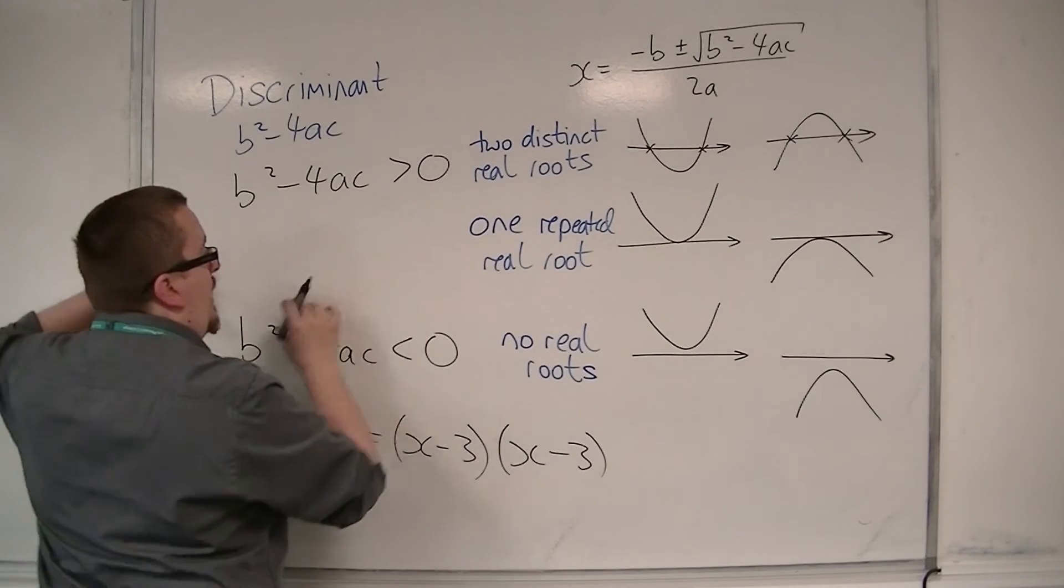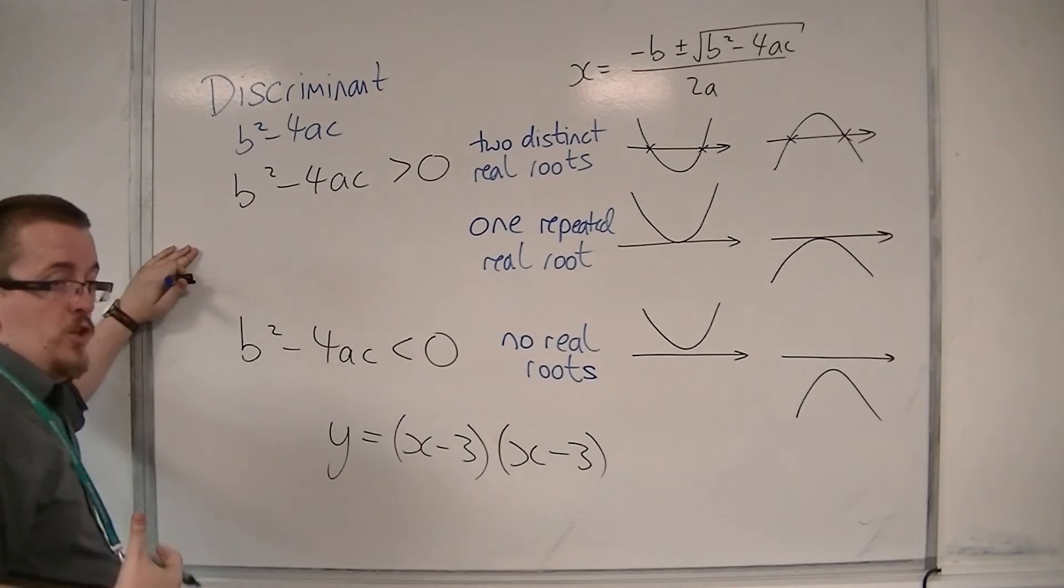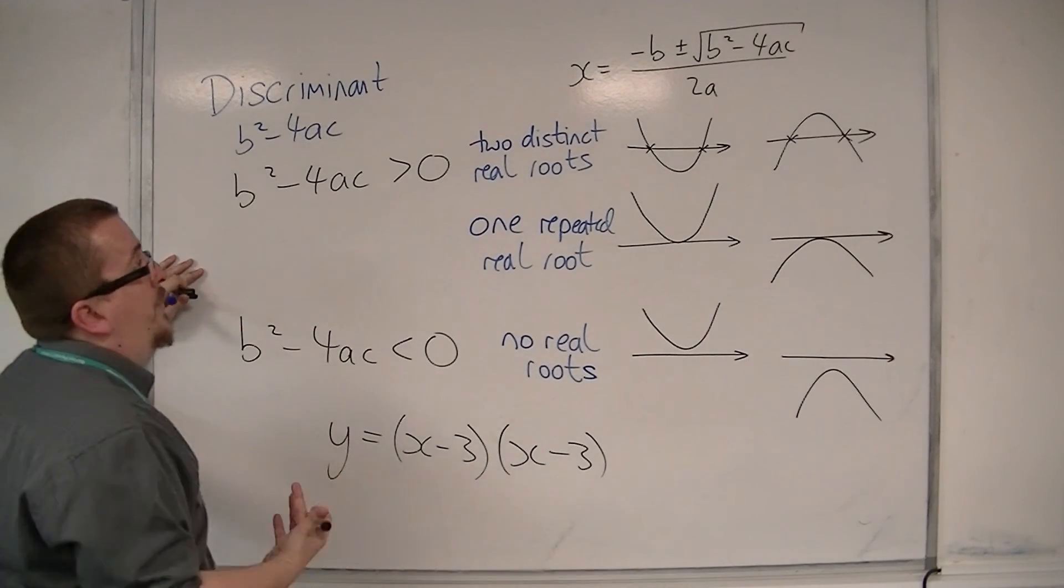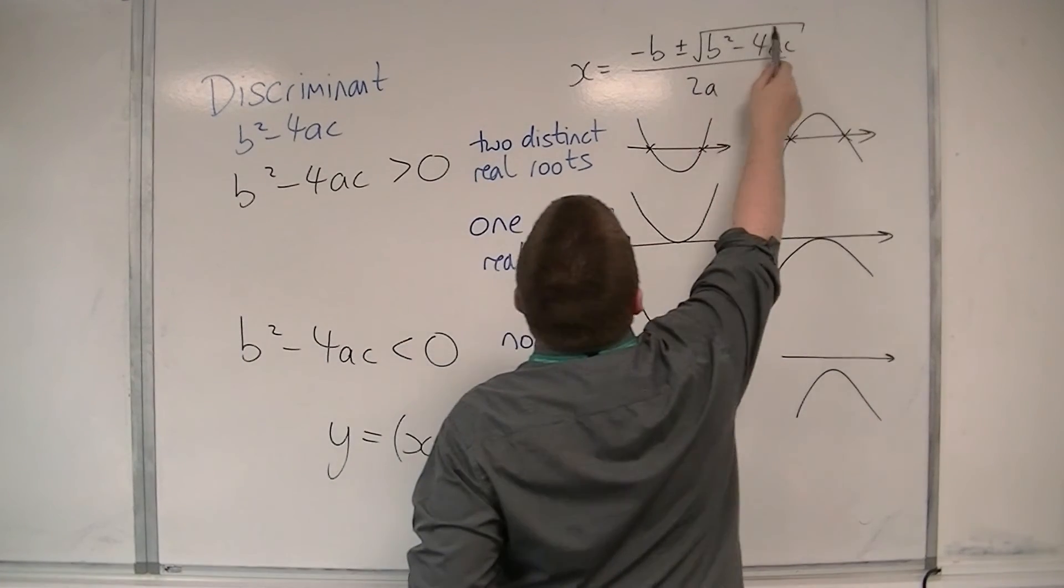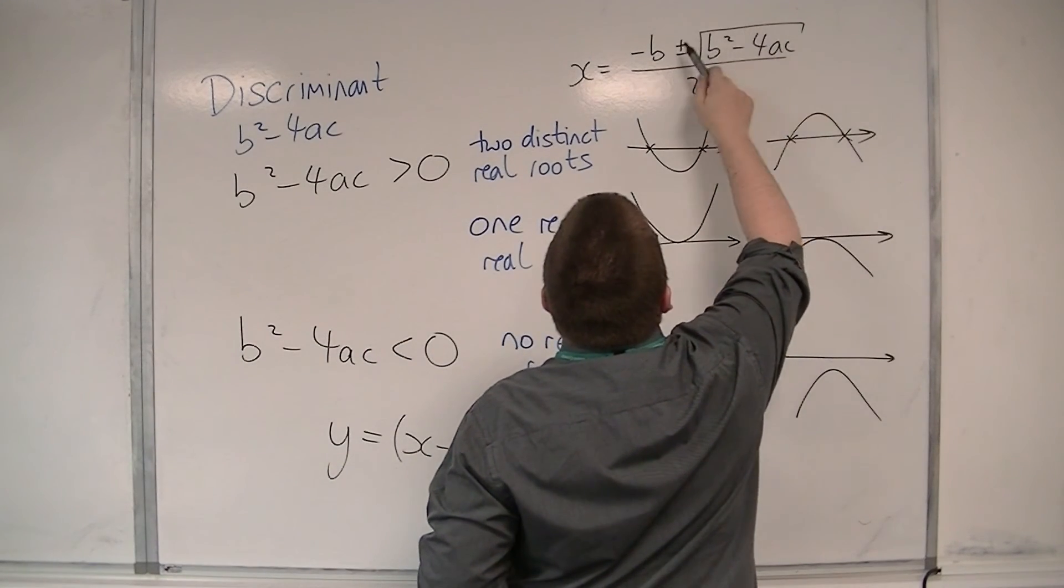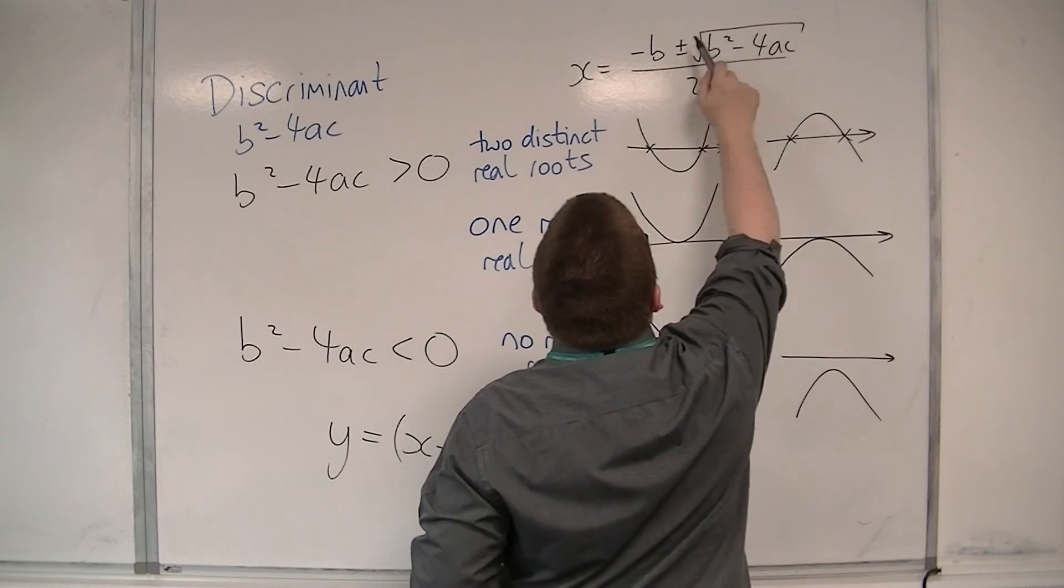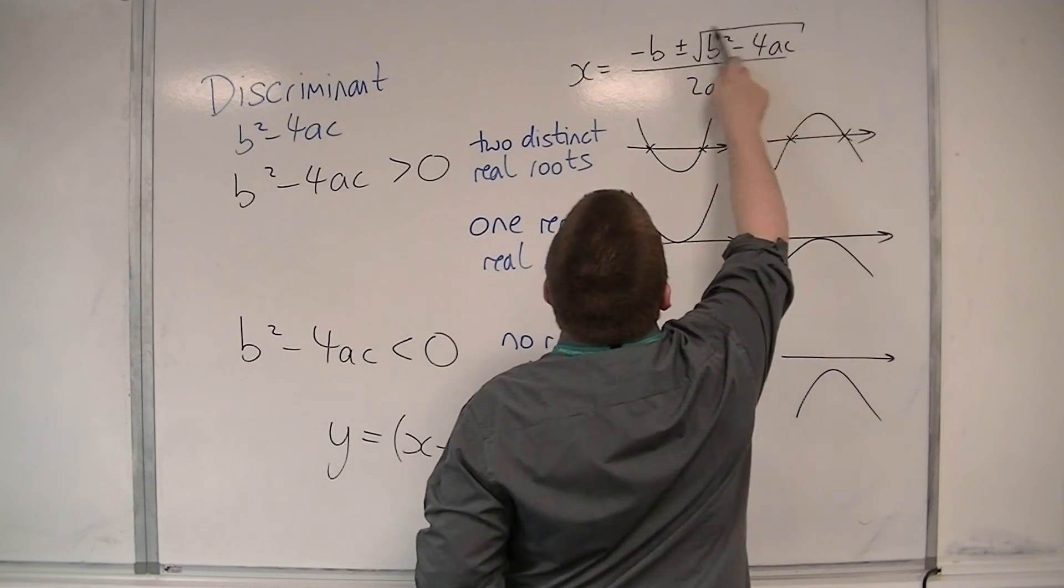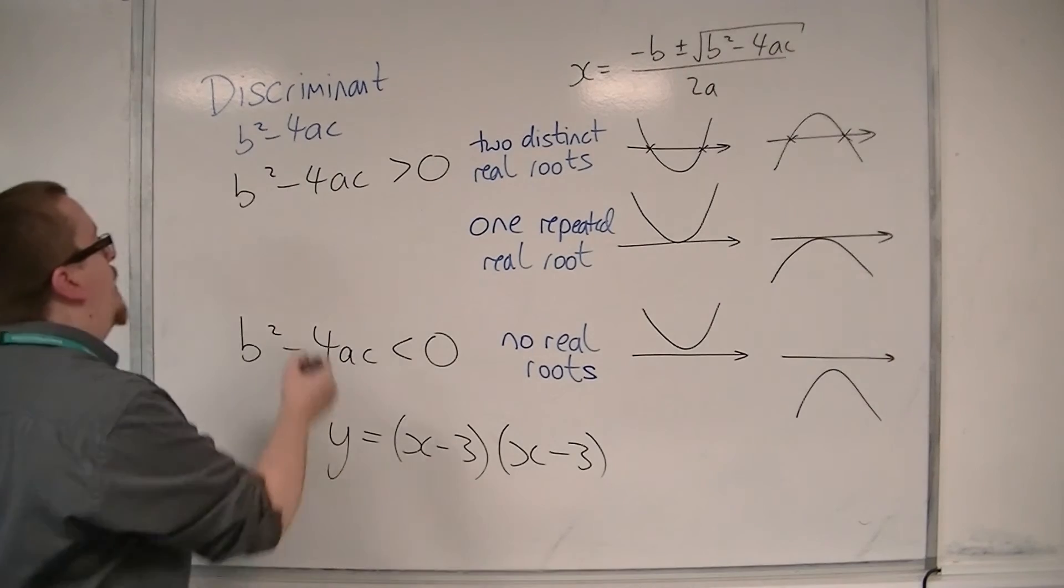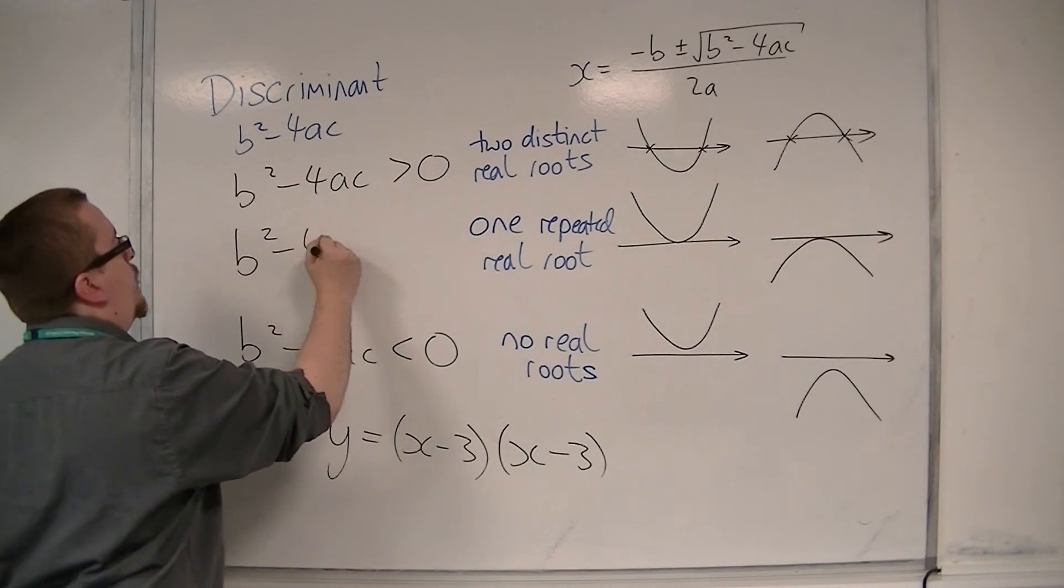So one repeated real root, when will this situation occur? Well that situation will occur when this section gets rid of that plus minus. And the only way that that section can then be ignored is if b² - 4ac is equal to zero.